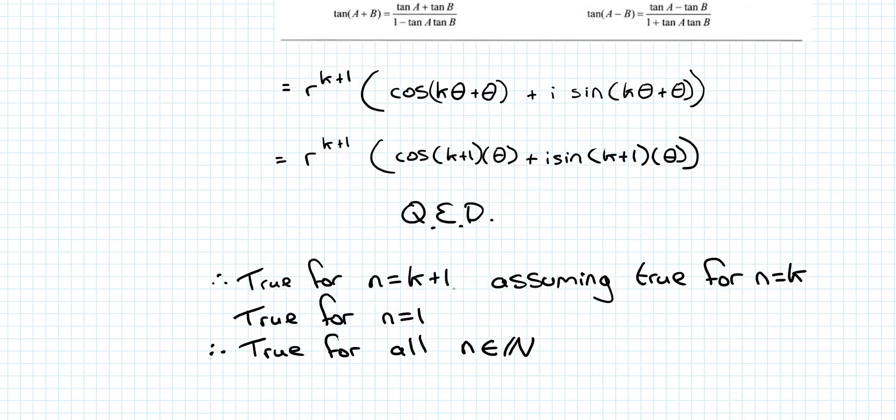And I do our final step. Therefore, it's true for n is equal to k plus 1, assuming it's true for n is equal to k. True for n is equal to 1. True for all n's elements in natural numbers.